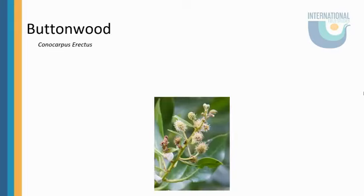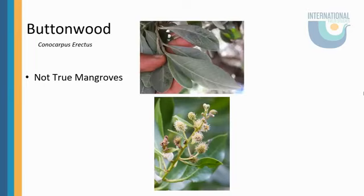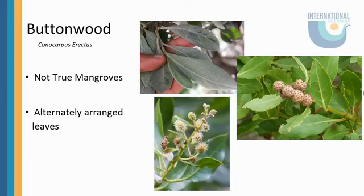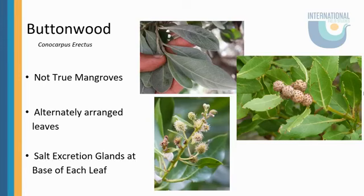Our last plant that we are going to talk about is buttonwood. These are actually not true mangroves — they are associates and are sometimes called gray mangroves. Buttonwoods are not true mangroves because they are less salt tolerant than all true mangroves. Because of this, they are found furthest inland and are the last zone in our typical line of mangrove zones. Buttonwoods can easily be identified by their alternating leaf pattern, which you can see in that top photo. They also have button-shaped flowers — those little brown balls on their leaves. They are also distinguished by two little salt glands at the base of each leaf, almost like the white mangrove.